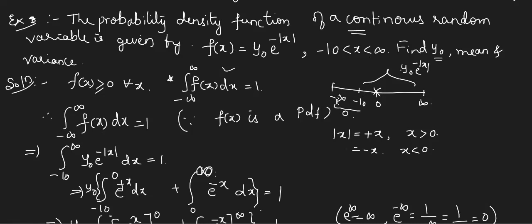On the real line, -10 lies between -∞ and 0. So the function is defined as y₀·e^(-|x|) between -10 to ∞, and 0 elsewhere. We divide the integral from -∞ to ∞ as: from -∞ to -10 the function is 0, and from -10 to ∞ it is y₀·e^(-|x|) dx = 1.